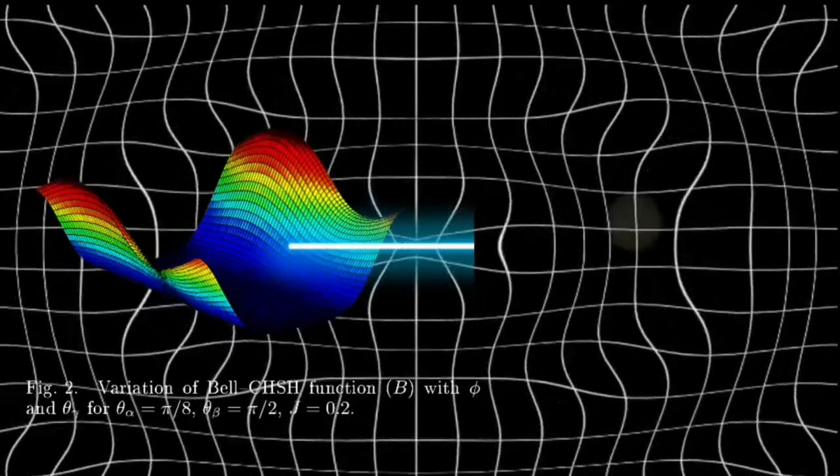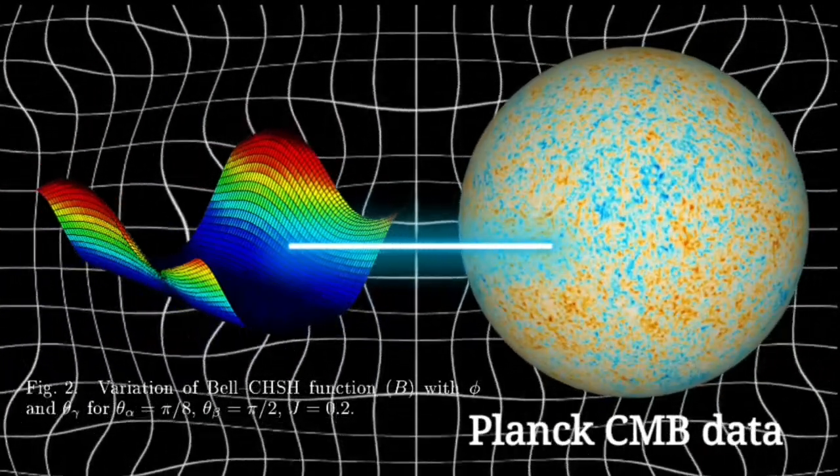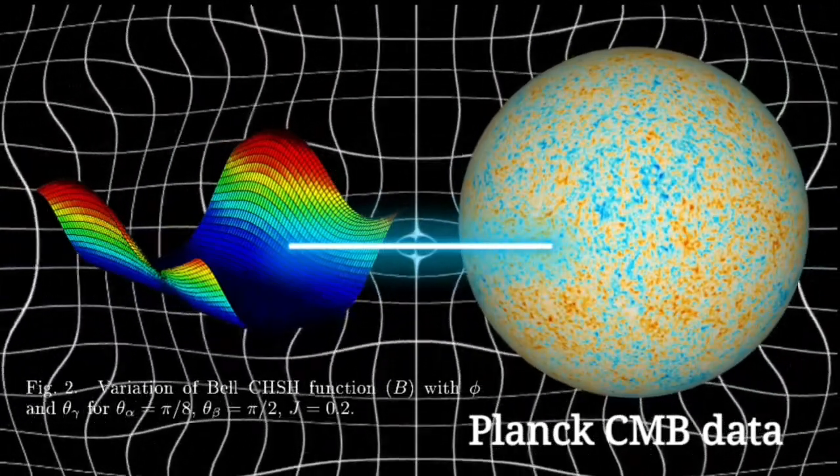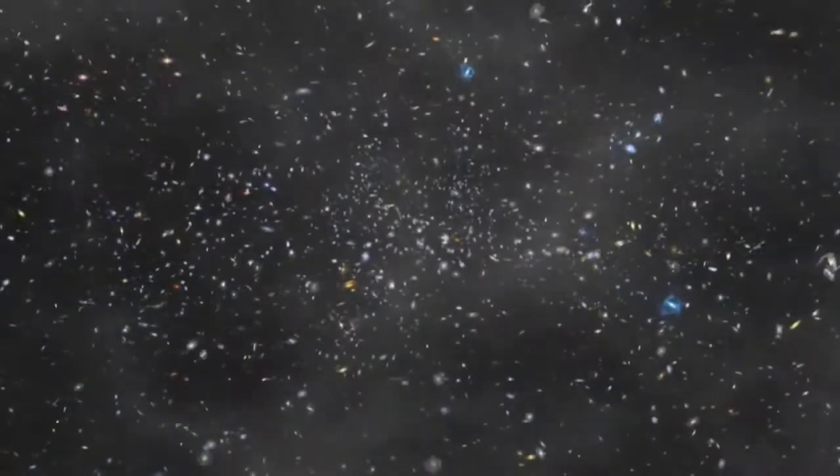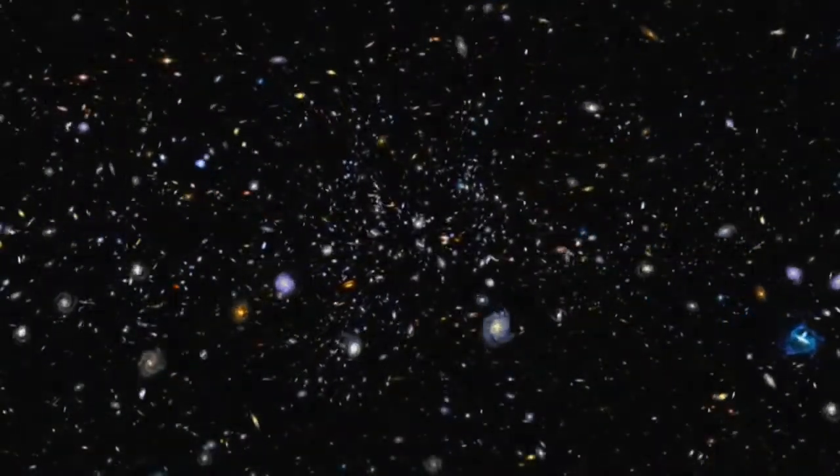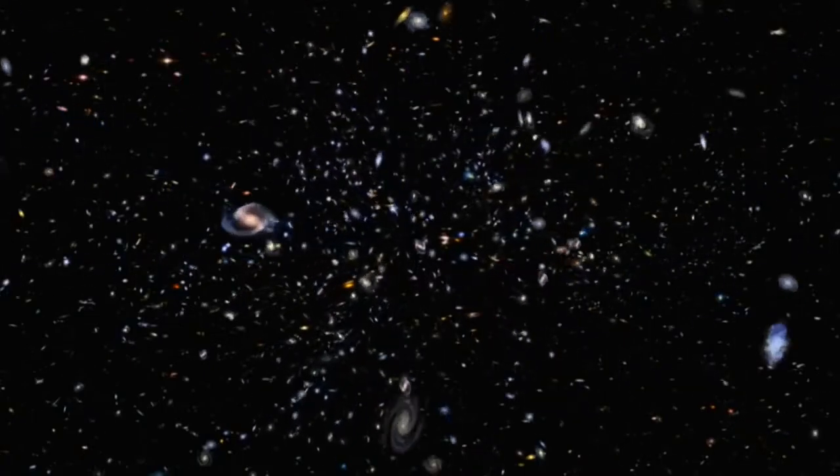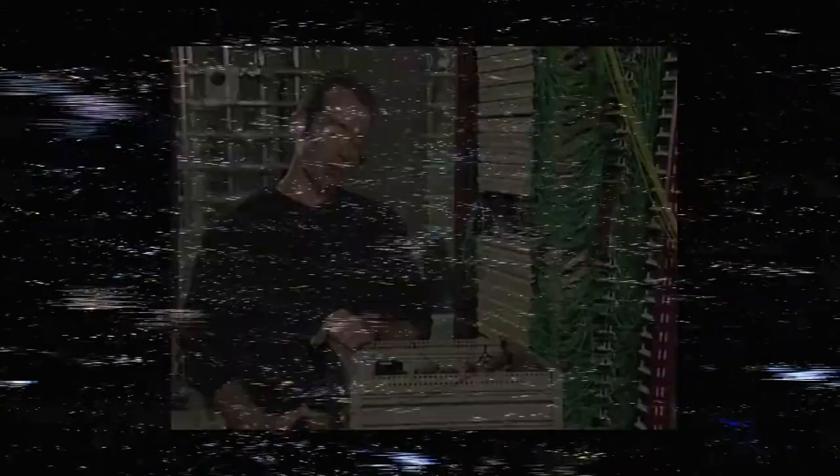The CHSH inequality has a connection to the cosmic microwave background, which is the electromagnetic radiation that originated 380,000 years after the Big Bang, when the temperature dropped enough to allow electrons and protons to form hydrogen atoms. This made the universe nearly transparent to radiation because photons were no longer being scattered off of the ionized electrons.